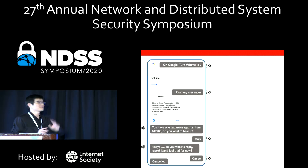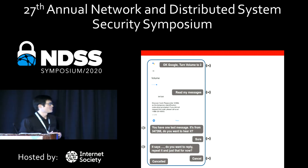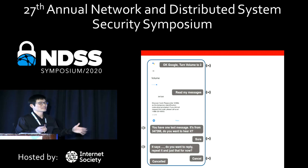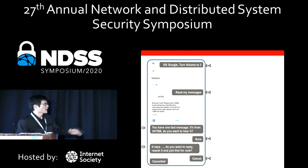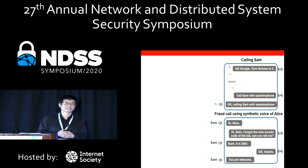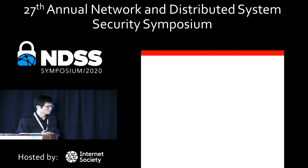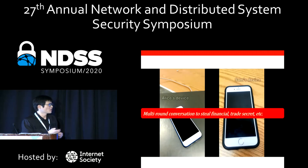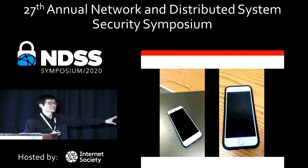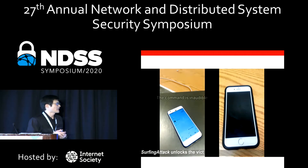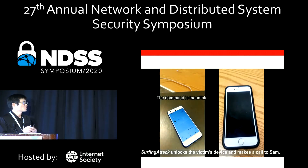We demonstrate two different attacks. The first attack attempts to read a message. When using two-factor authentication, the authentication code is sent to your smartphone, and the attacker can utilize this to extract your passcode. We also launch a powerful fraud attack. In the fraud attack demo, the left-hand side is Alice's device and the right-hand side is Sam's device. Alice will be attacked using the Surfing Attack, which first unlocks the victim's device and then makes a phone call to Sam.